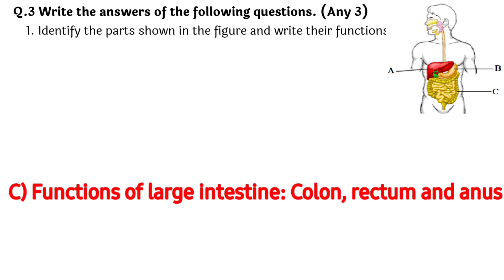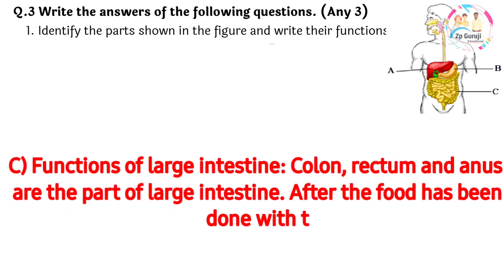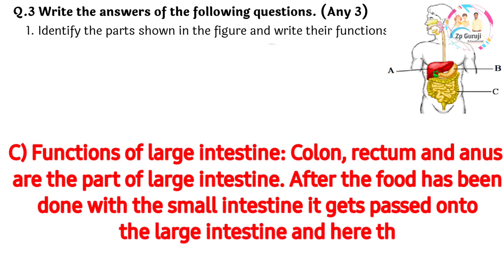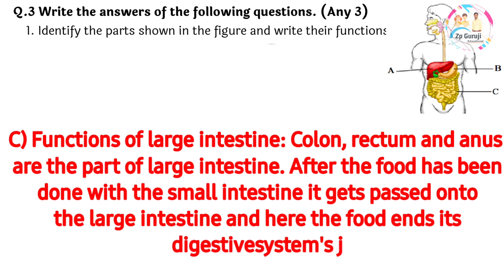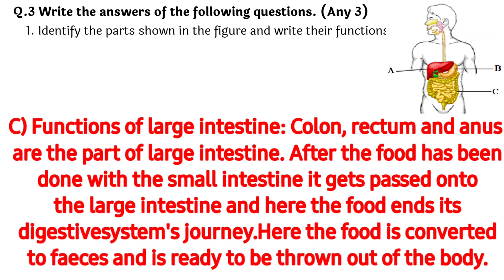Functions of the large intestine: colon, rectum, and anus are parts of the large intestine. After the food has been processed by the small intestine, it gets passed on to the large intestine, where the food ends its digestive system journey. Here the food is converted to feces and is ready to be expelled from the body.